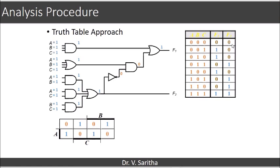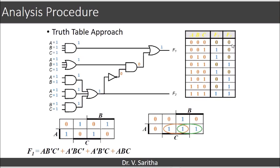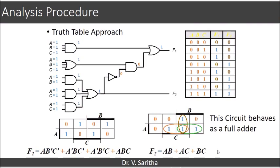Here we are using K-map and F1 is expressed in the form of sum of minterms and F2 we are expressing in the form of sum of minterms. These expressions are nothing but for sum and carry of the full adder. F1 behaves as a sum of the full adder and F2 behaves as a carry of the full adder. So, this circuit behaves as a full adder.